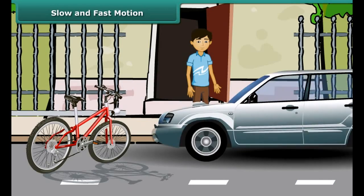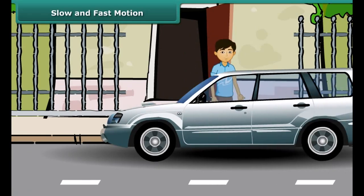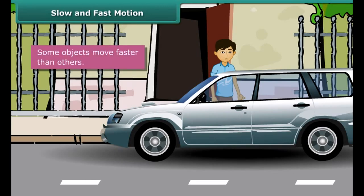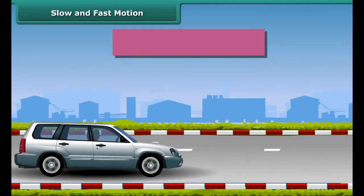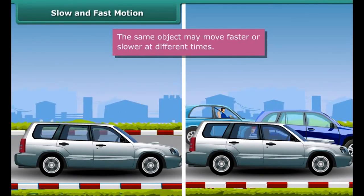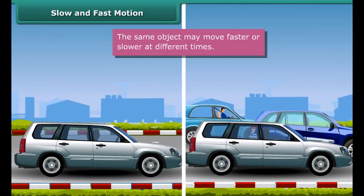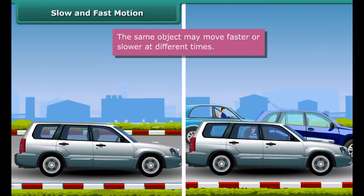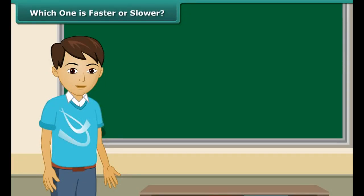Suppose you have an appointment with your doctor at 5 in the evening. It is already 4:30 pm and the doctor's clinic is 5 km away from your house. You have the choice of either cycling down or taking a taxi to the clinic. You will take a taxi because a taxi is faster than a cycle. So we can say that some objects move faster than others. The same taxi moves fast on an empty road and slow on a busy road. Thus, the same object can move fast at one time and slow at another time.